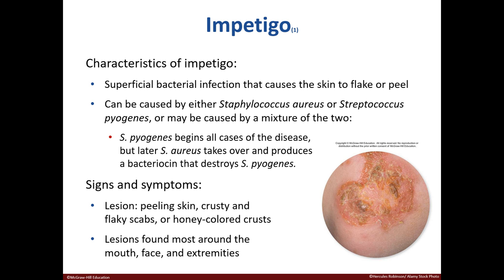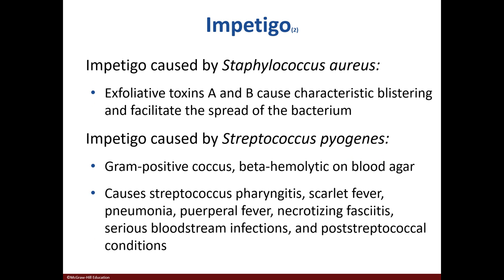Impetigo is caused by bacteria that cause the skin to peel or flake. It can be caused by either Staph aureus or Strep pyogenes, or both. Most of the time Strep pyogenes starts it. Impetigo patients present with honey-colored crust or flaky scabs, and lesions are typically seen around the mouth, face, and extremities. If Staph aureus causes impetigo, its toxins cause the blistering and help the bacteria to spread.